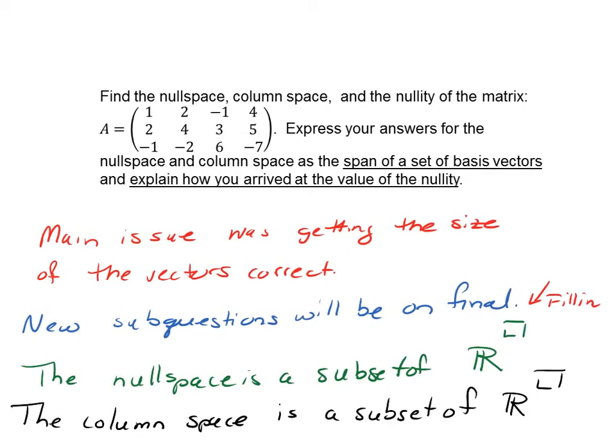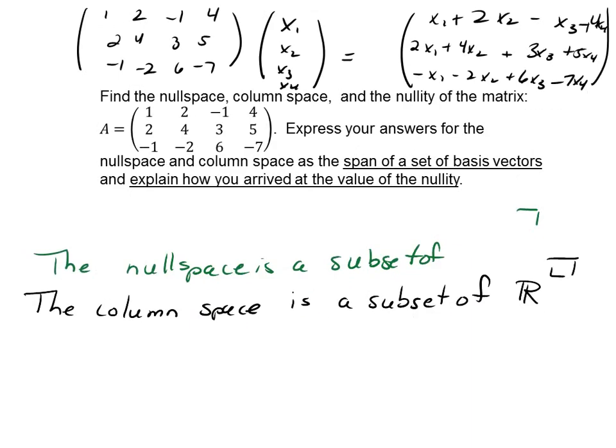I'll leave a little box and ask you where the null space lives and where the column space lives. So, for example, the null space is a subset of R to the, and the column space is a subset of R to the, how do you get those answers? Well, you look at the null space or the set of X values that solve AX equals zero.